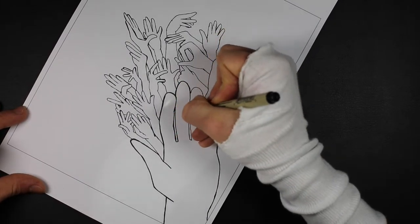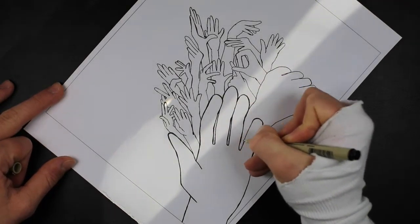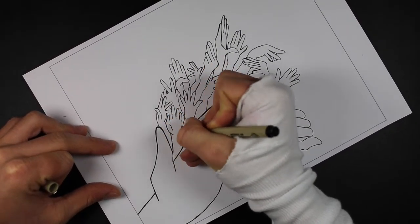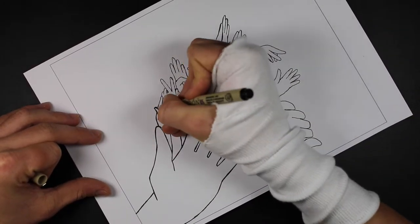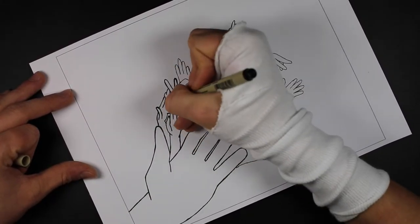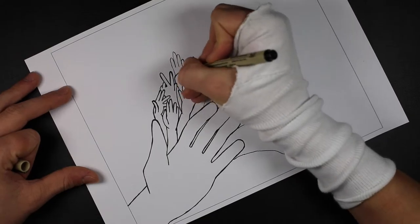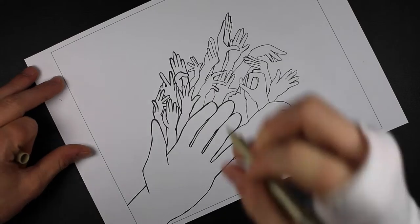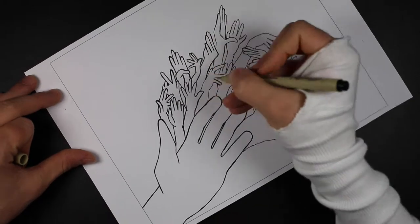'Oh,' thought the tree, 'if the evening were but come, if the tapers were but lighted, and then I wonder what will happen. Perhaps the other trees from the forest will come to look at me. Perhaps the sparrows will beat against the window panes. I wonder if I shall take root here and winter and summer stand covered with ornaments.' He knew very much about the matter, but he was so impatient that for sheer longing he got a pain in his back. And this with trees is the same thing as a headache with us. The candles were now lighted. What brightness! What splendor! The tree trembled so in every bough that one of the tapers set fire to the foliage. It blazed up famously.